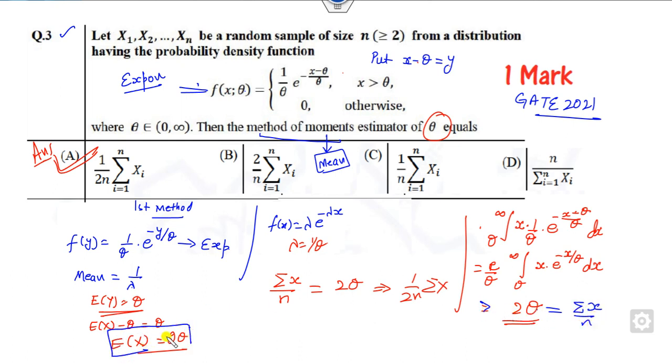So whenever there is a method of moments, how many unknown parameters are there? Only one. So you have to find only the first mean. From here you can get the right answer. This is the shortcut way you can apply with the help of the distribution method. You can get one mark in a very simple manner. All the best of luck students for your exam, happy learning.